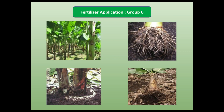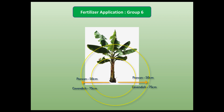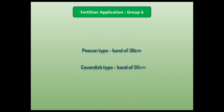Banana is different from all other fruit trees — its roots are fibrous and very shallow. The feeding mouths are very close to the trunk, at about 20 centimeters in fruiting trees for both Cavendish and Poovan types. In younger plants it starts at about 15 centimeters from the trunk. The active roots spread up to 50 centimeters in Poovan type and up to 75 centimeters in Cavendish type. Fertilizers should be applied near the surface in a band of 30 centimeters for Poovan and 50 centimeters for Cavendish.